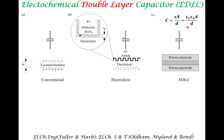We had seen that the capacitance goes as the area divided by distance of charge separation. So if you want to increase the capacitance, you need to increase the interfacial area when charge separation occurs. In our earlier lecture on porous electrodes, we had seen that in an electrochemical device, one of the important ways of increasing surface area is by creating a lot of porosity in the electrode.